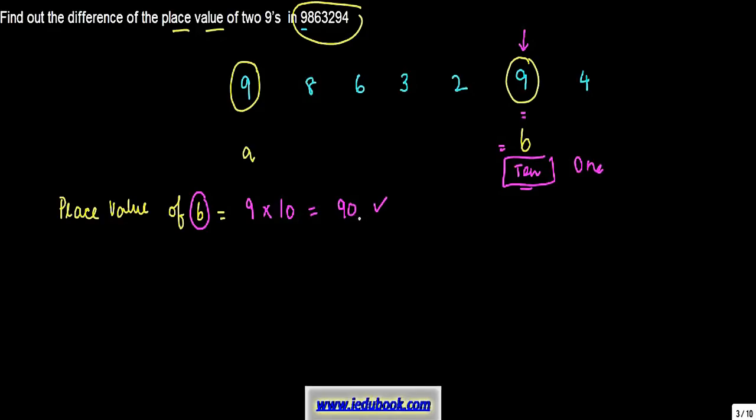Similarly, we again move towards the left. So this was ten, so this will be hundred, this will be thousand, this will be ten thousand, this will be lakh. So place value of a is equal to the number itself into this place value, which is ten lakh.